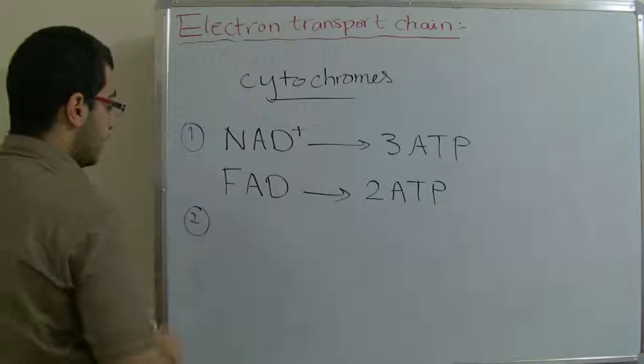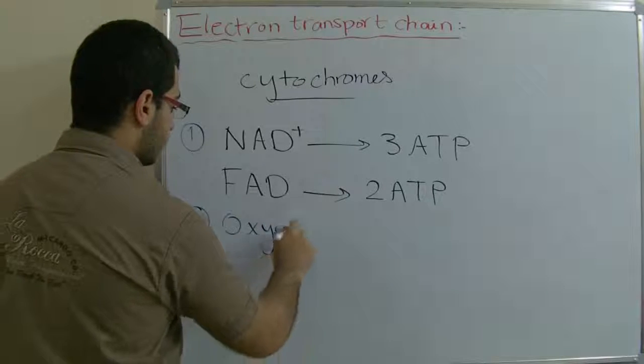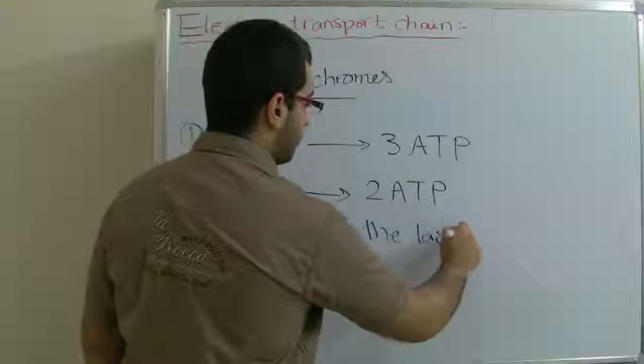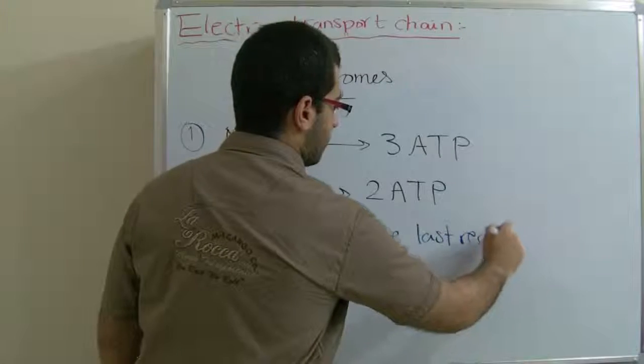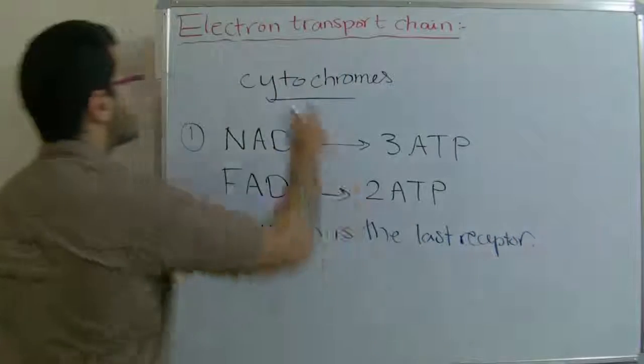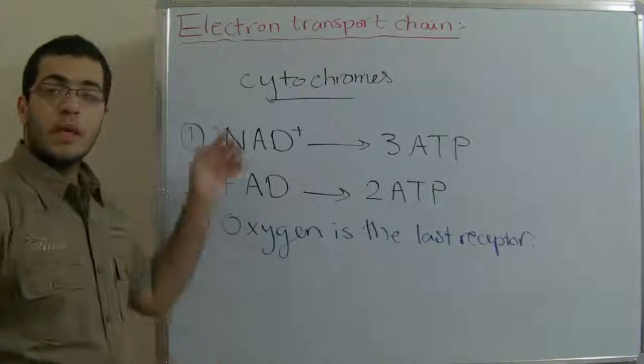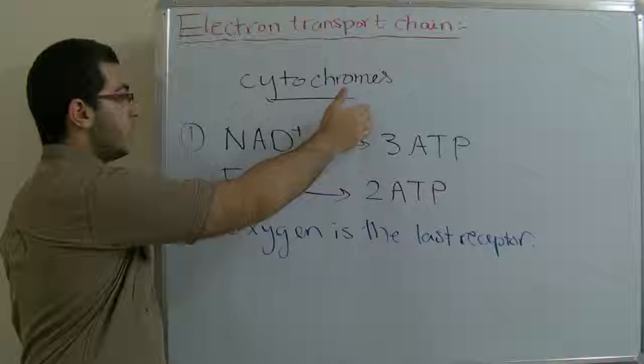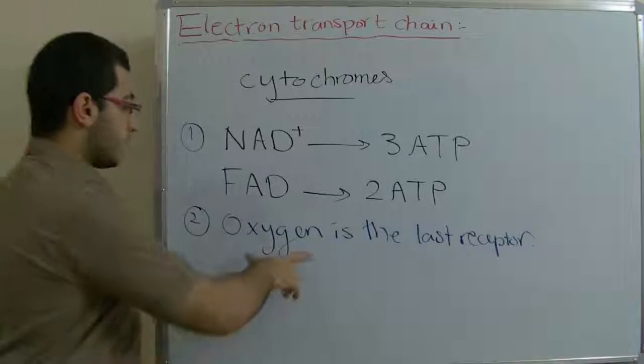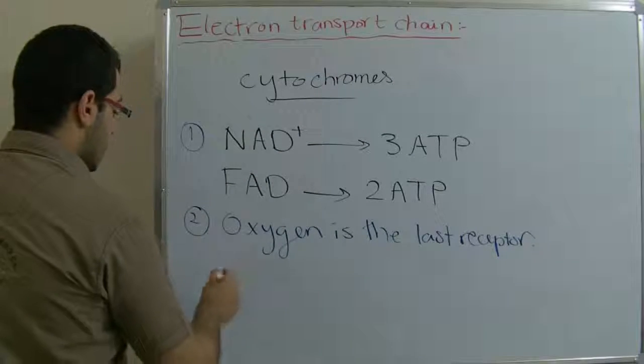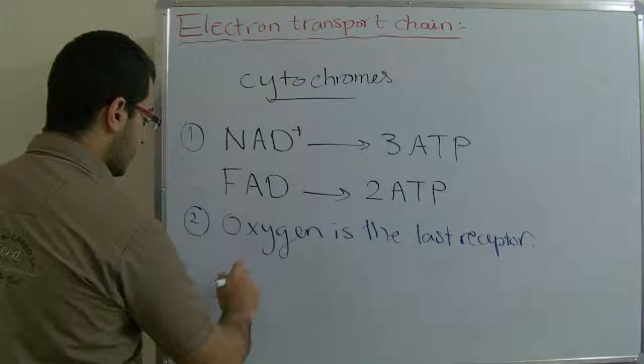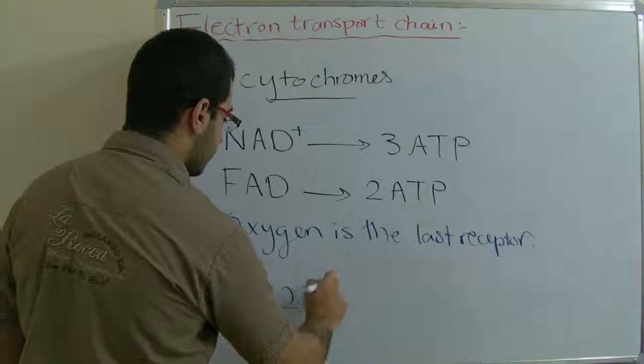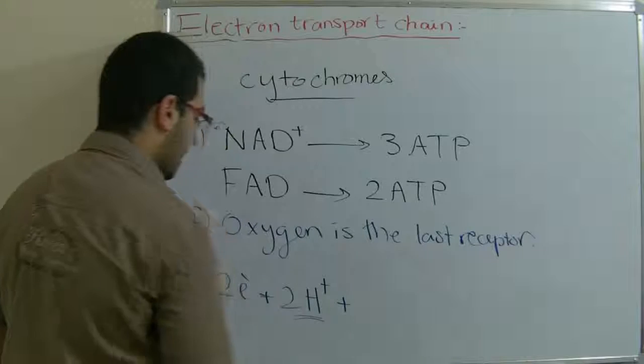The second thing is that oxygen is the last receptor in this electron transport chain. When the hydrogen carriers move from one cytochrome to another in their cycle, this cycle ends with oxygen. So that oxygen combines with two electrons, two protons, a proton is a hydrogen atom.